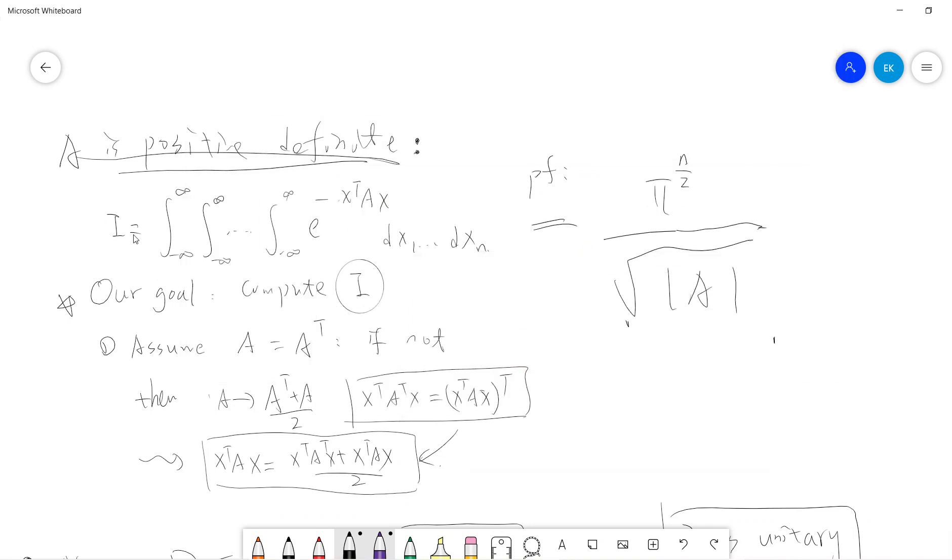So our goal is to compute this I. The first remark I want to say is that we can assume A is positive definite and A is the same as A transpose. So A should be symmetric. The idea is that if A is not symmetric, then I can replace A to be A transpose plus A divided by 2. And it's easy to see that X transpose A transpose X is the same as X transpose AX. So this lemma tells you that if A is not symmetric, then I can always make A to be symmetric.